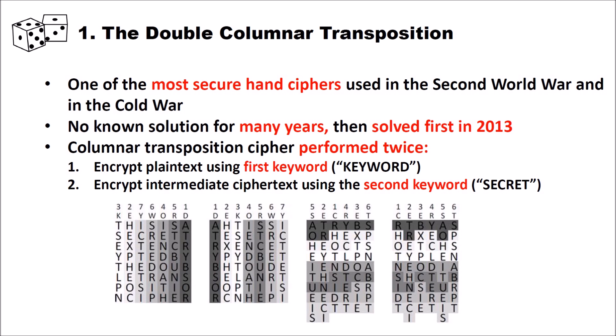Here is an example of how you encrypt using the double columnar transposition cipher. You use the first keyword and write it on top of your text — for example 'this is a secret text encrypted by the double columnar transposition cipher.' Then you transpose the text using the columnar transposition by ordering the keyword alphabetically — for instance d, e, k, o, r, w, y numbered one through seven — and then you read out column-wise.